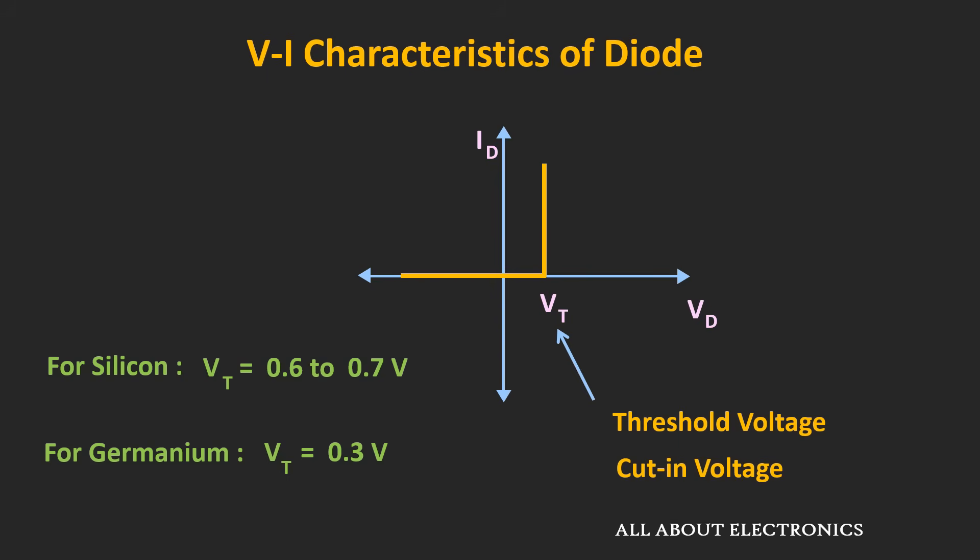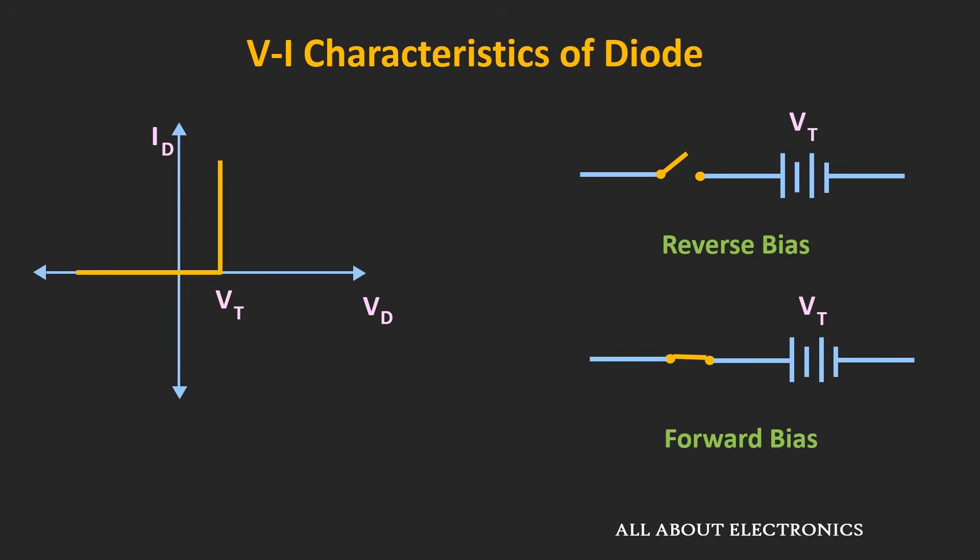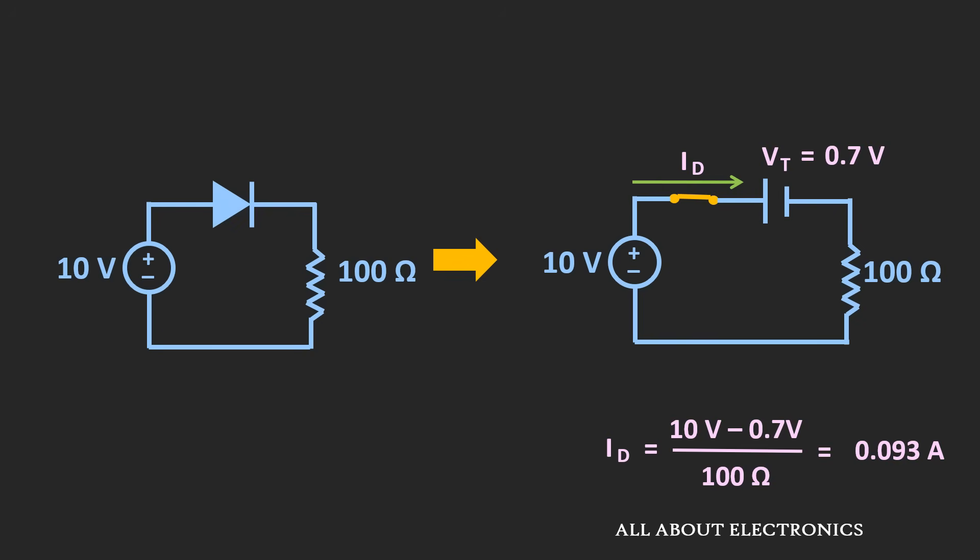This is the first approximation for the diode curve — here we consider the diode as an ideal diode, but it will only allow current flow once the applied voltage crosses the threshold voltage. The equivalent circuit looks like this: in case of reverse bias, it simply acts as an open switch, but whenever the applied voltage crosses the threshold voltage, it acts as a closed switch and allows the flow of current.